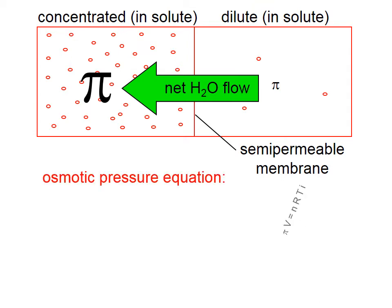Let's go through the osmotic pressure equation, which looks like this: π times V is equal to n times R times T times that van't Hoff factor, i.